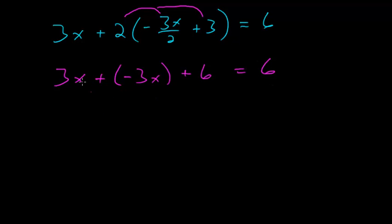Notice something interesting happens here. The 3x and minus 3x cancel, and what we're left with is that 6 equals 6.